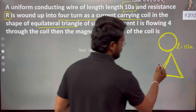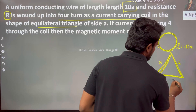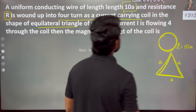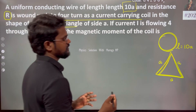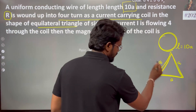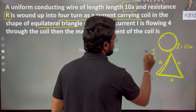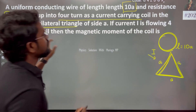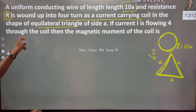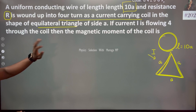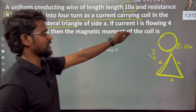In the equilateral triangle shape, if the current I is flowing through the coil, then we need to find the magnetic moment of the coil.